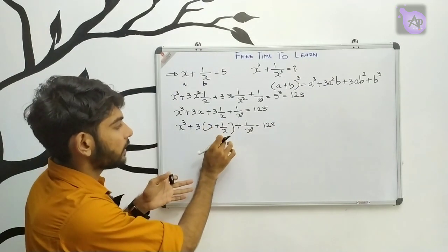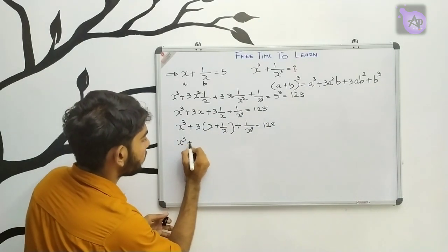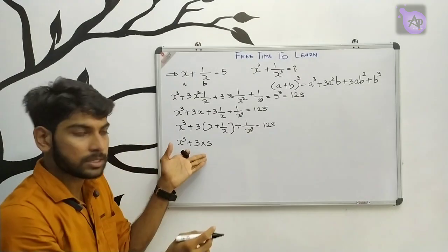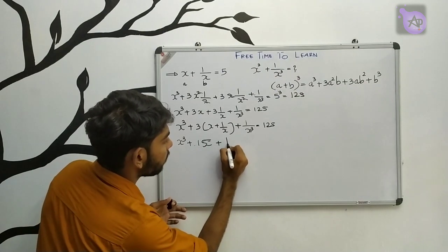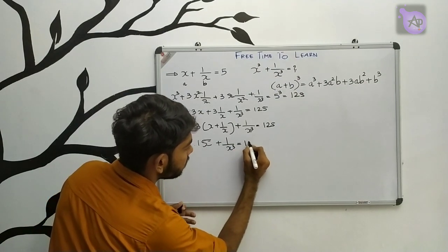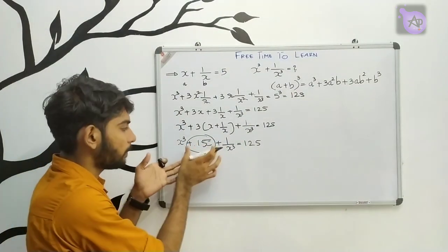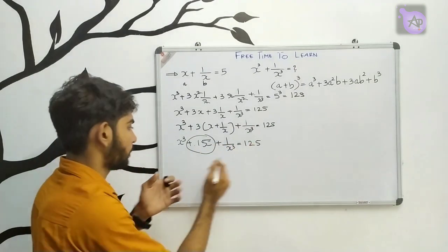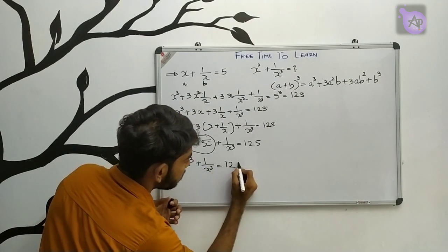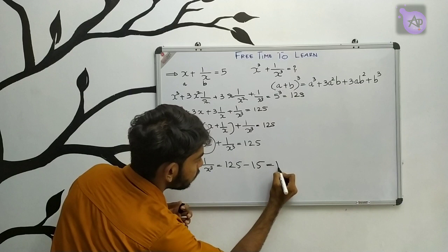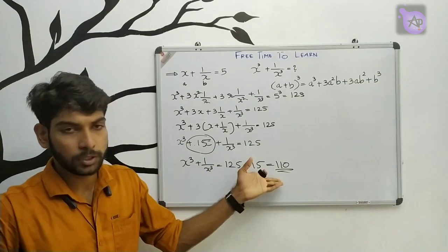We have x plus 1 by x equals 5. So x cube plus 1 by x cube plus 3 times x plus 1 by x equals 125. That means x cube plus 1 by x cube plus 15 equals 125. Therefore, x cube plus 1 by x cube equals 125 minus 15 equals 110.